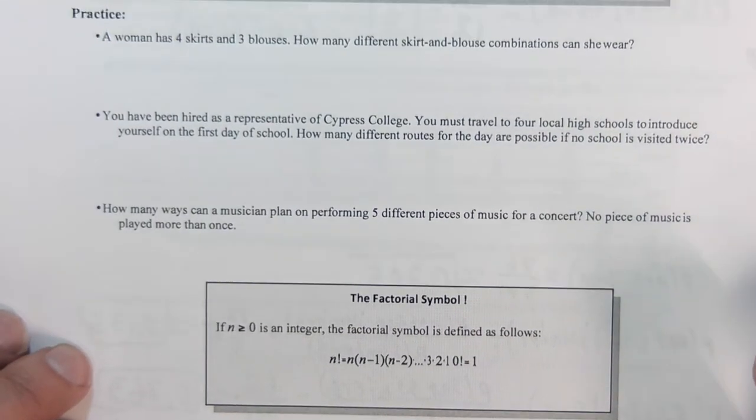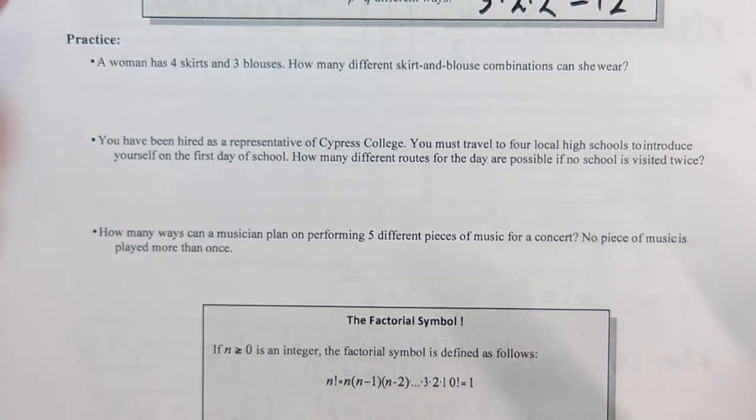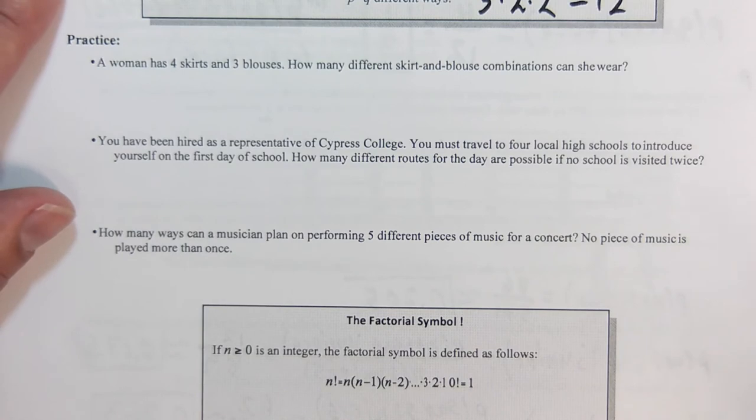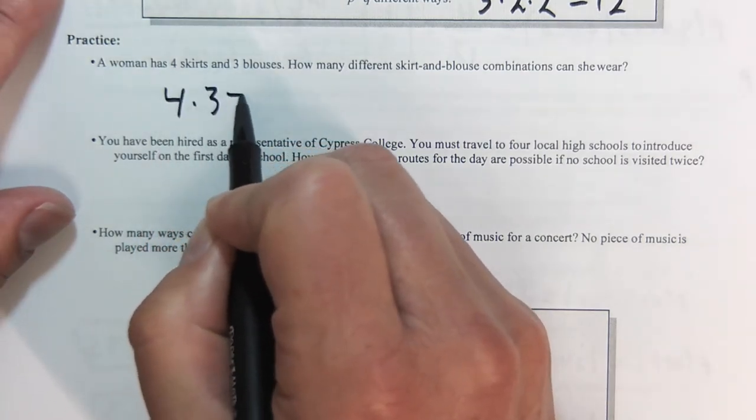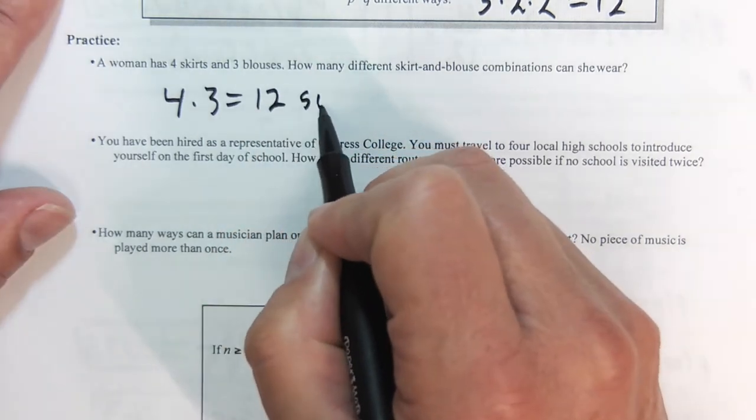Let's do some more practice. A woman has four skirts, three blouses. How many different skirt-blouse combinations can she wear? Well, that's going to be 4 times 3, or 12 suit combinations.